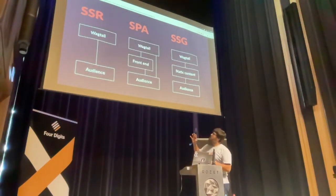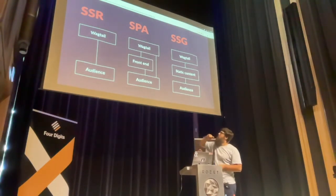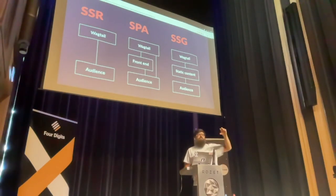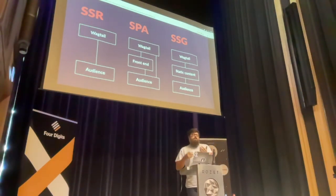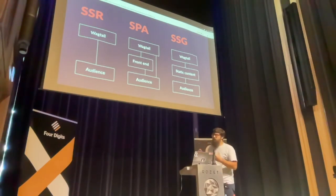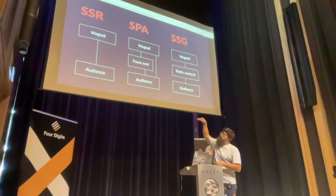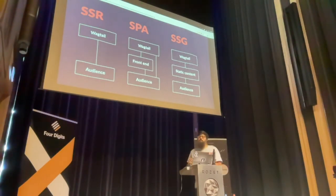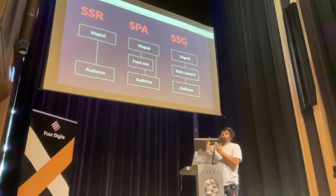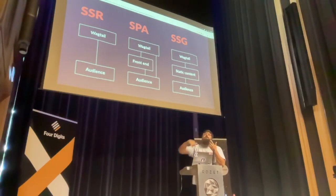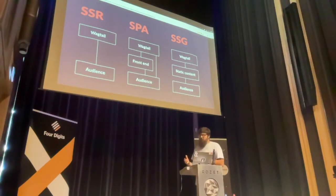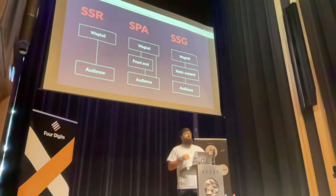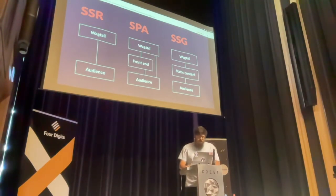Trying to visualize the different types: with server-side rendering, your client essentially talks to your back-end, and your back-end generates the resulting files and serves them back. With SPAs or modern frameworks, you have your back-end and your front-end, and the audience talks mostly to the front-end, but from time to time they have to talk to the back-end and do that whole round-trip. With SSG, your back-end generates the static content and your audience will always hit that static content.